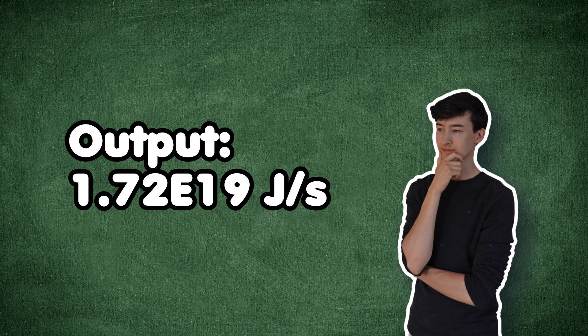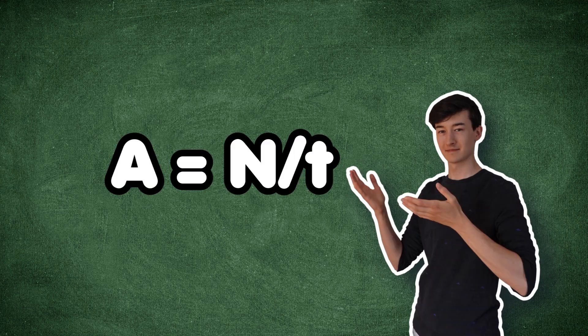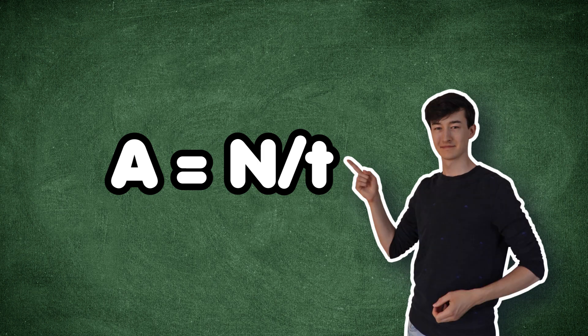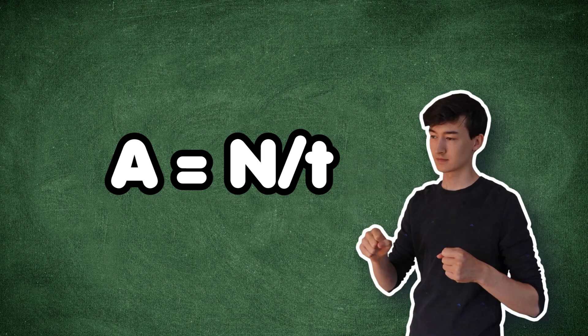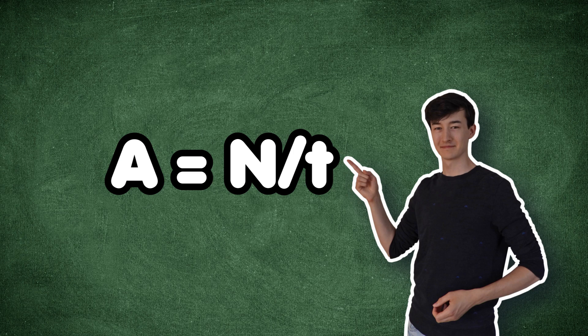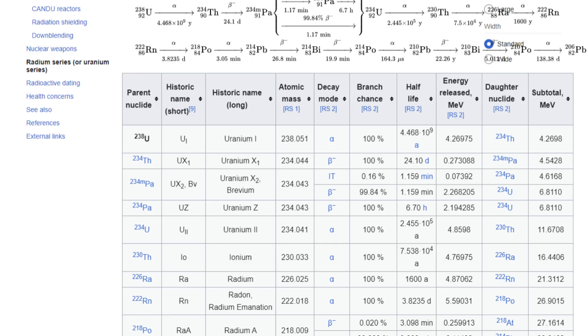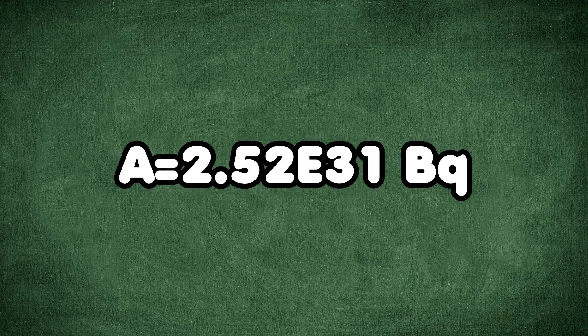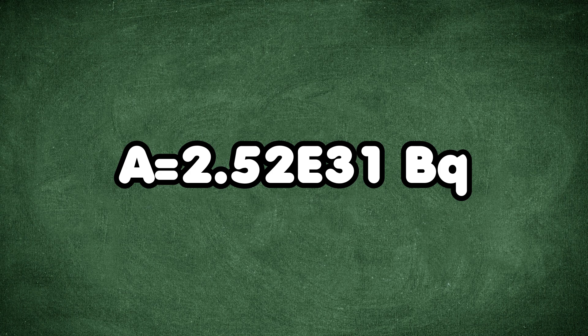So how much uranium will be required to explain this activity? Well, the activity of some radioactive material is expressed as A equal to N divided by the half-life of the material. A is the amount of decay reactions per second. N is the total number of atoms of the decaying material that need to be present. And the half-life is the amount of time it takes for half of the material present to have decayed into other things. We know that one decay reaction of uranium-238 gives off this much energy.